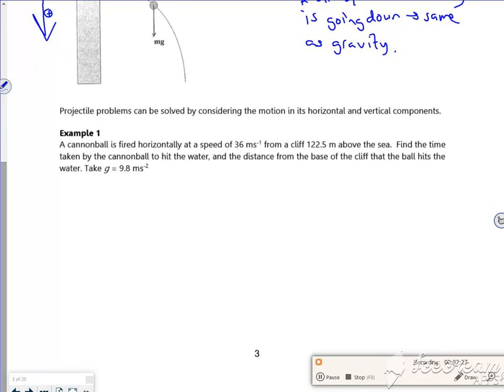Let's do an example with two and a half minutes to go. So a cannonball is fired horizontally at a speed of 36 meters per second from a cliff 122.5 meters above the sea. So there's my cliff, there's my little cannon. Boom, there goes my cannonball at 36 meters per second. And it's at a height of 122.5.